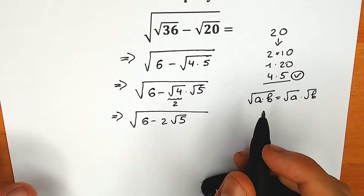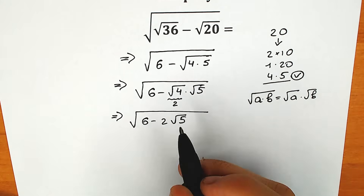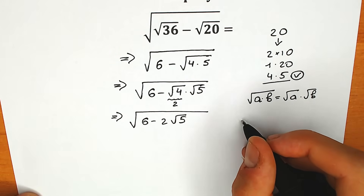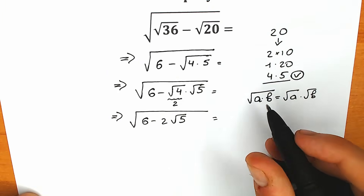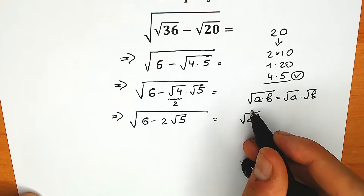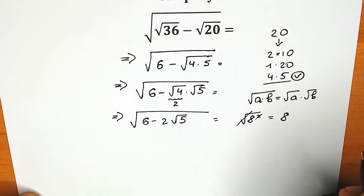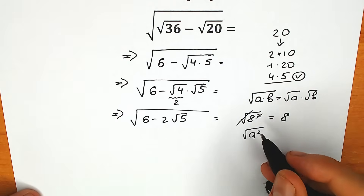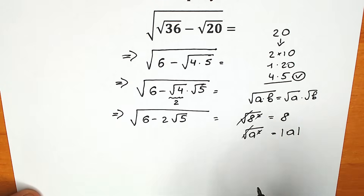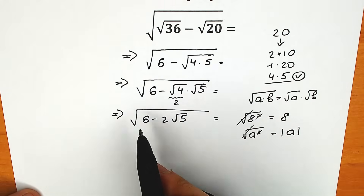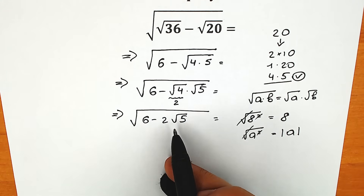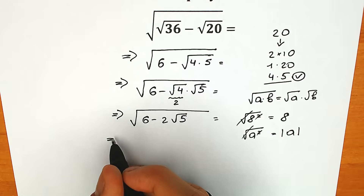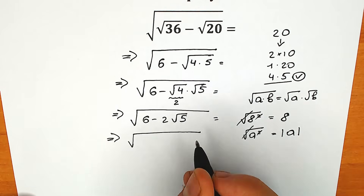A lot of students don't understand what to do next. The main idea is to create a perfect square inside this square root sign. For example, square root of 8 squared — you cancel the square and get 8. Generally, if you have an expression with the second power inside a square root, you can cancel it but you need to put an absolute value. So instead of 6, let's write 5 plus 1, giving us square root of 5 plus 1 minus 2 times square root of 5.